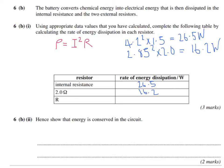Through R, using the numbers we calculated, we had 1.35 as the current, squared times the resistance of R which was 4.2, giving 7.7 watts.